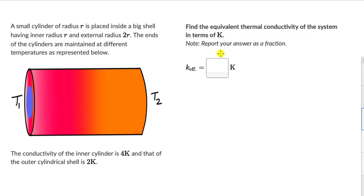Pause the video and first attempt this on your own. In the question we see that these two cylinders — the small purple cylinder and the bigger pink cylinder — are connected across the same temperature, T1 and T2. Temperature at both of their ends is T1 and T2, which means they are connected in parallel.